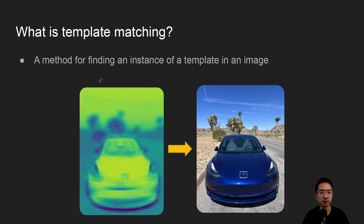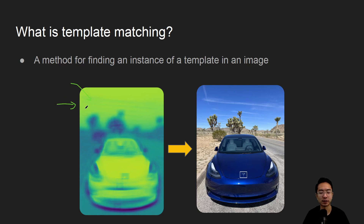So what is template matching? The idea is it's a method to find an instance of a template in an image. So let's say we have a picture with a Tesla logo — we have some image, we want to find where it is. We're going to use this image on the left to find out where it is on the right.